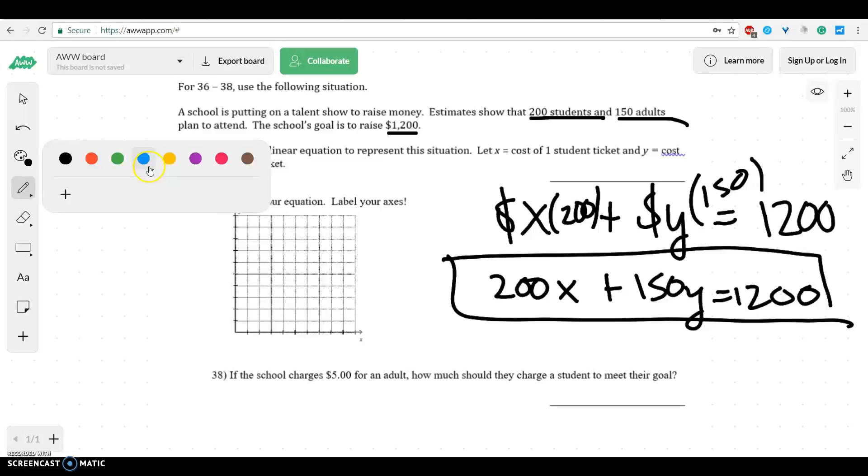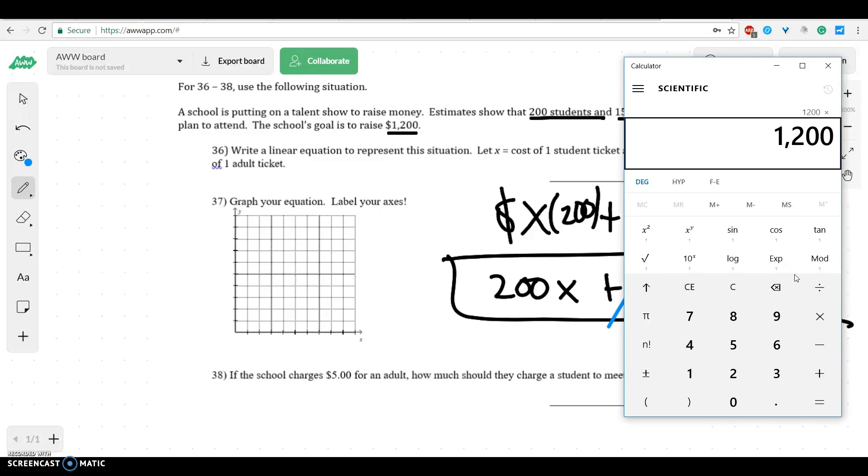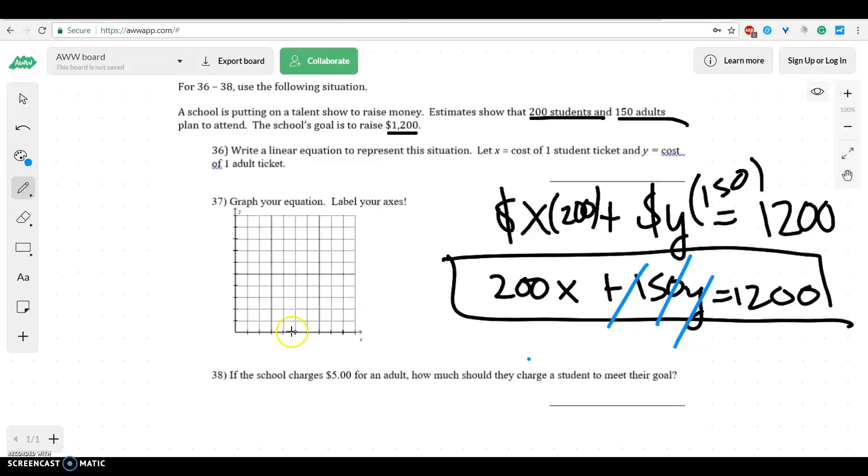So by graphing this, we can graph this by covering up this 150 and then finding what X is. So that would be 1,200 divided by, whoops, not times, whoops, 1,200 divided by 200, which would give us 6. So this would cross at 1, 2, 3, 4, 5, 6. And you could think about that, that would make sense. Because let's say you sold zero adult tickets and only sold student tickets. How much would you have to price every student ticket to get 1,200? Well, 200 times 6 would give you 1,200.